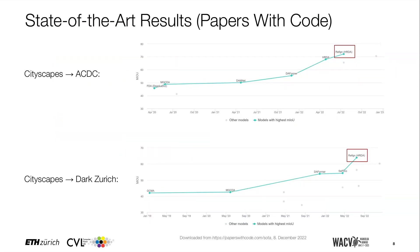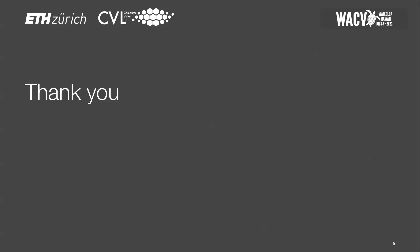Here is a summary of the segmentation performance of our method on two normal-to-adverse condition benchmarks, ACDC and Dark Zurich. Built on top of HRDA, our method is currently state-of-the-art on both benchmarks. For more details and experimental results, check out our paper. Thank you for your attention.